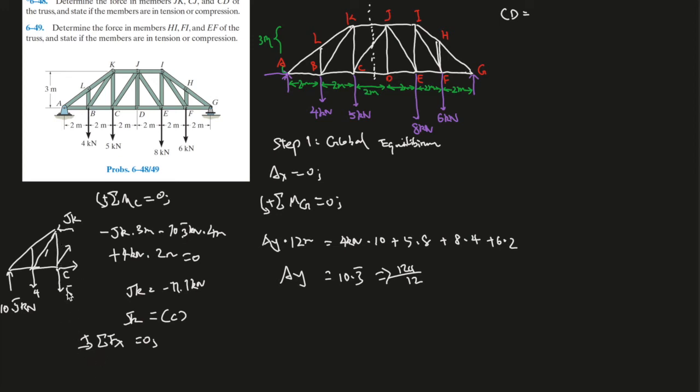That means we got the magnitude right, we just drew the direction of the force of JK oppositely. So JK should be this way, and JK is pushing on the joint. Therefore, in reality, it's being compressed. So JK is compressing. And over here we can write JK is 11.1 kilonewtons and is in compression.